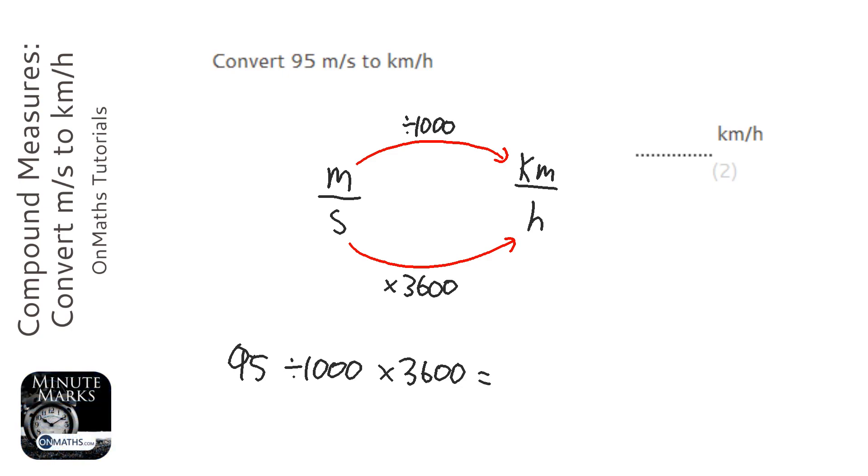We get the answer of 342 kilometers per hour. Now it would be alarming if 95 meters per second, which is pretty quick, ended up being 300 million blah blah blah kilometers per hour, which is just unreasonably a large number. So meters per second to kilometers per hour should be kind of in the same ballpark. So 95 to 342, the numbers are in kind of the same region of scale.